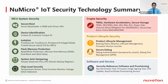Here is a summary for NemoTone IoT security technology. Overall, we have four categories: MCU system security, crypto security, product lifecycle security, and software and service. With MCU system security, we have secure boot, device identification, and isolation. This covers TrustZone-M, TrustZone-A, flash memory protection, system anti-tampering, and chip-level security.